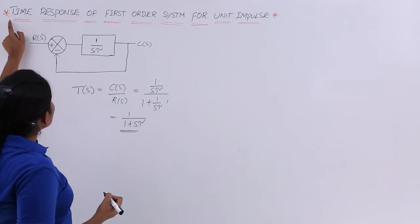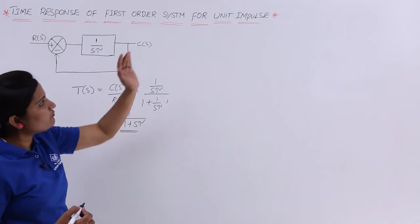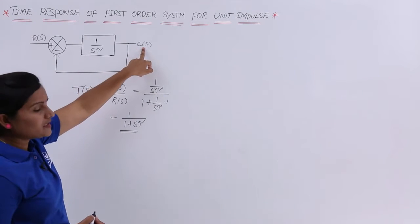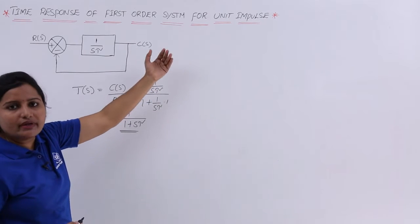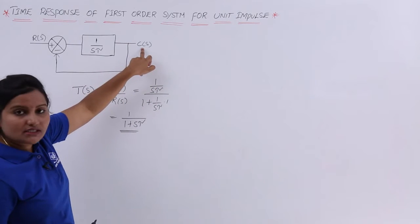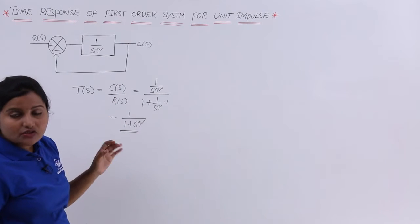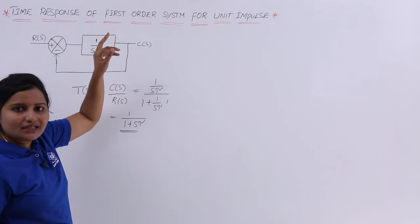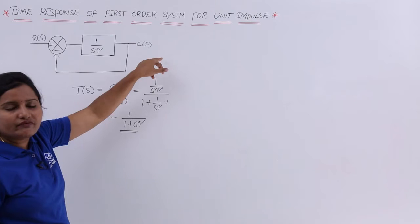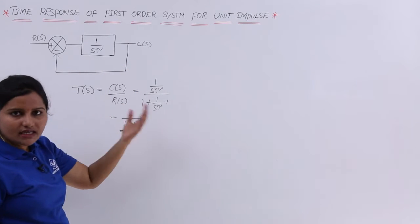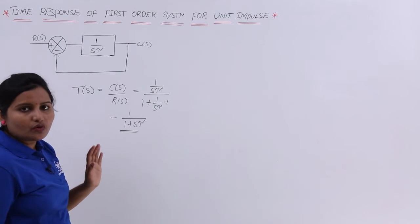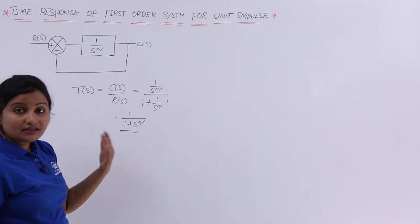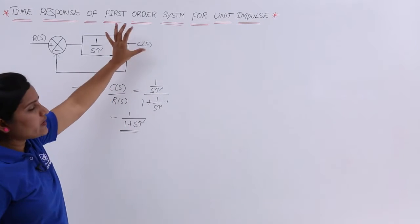What we need to find out is the time response of this first order system for the input as impulse. Time response is the response of the system in terms of time, whereas C(s) is the response in terms of Laplace transform — that is, in the s domain. We need to find the output of the system with respect to time, which is C(t).